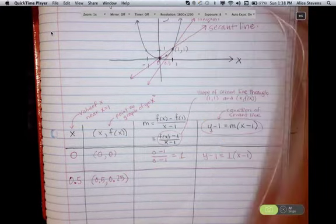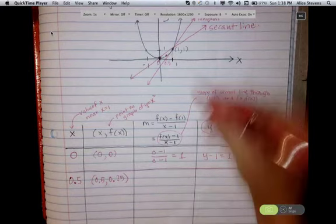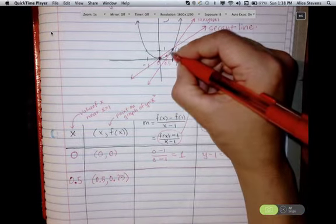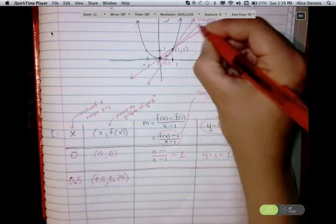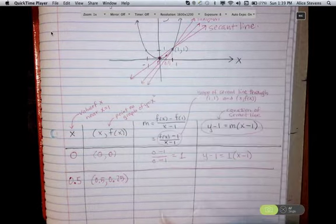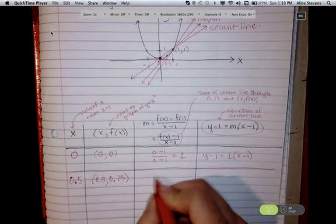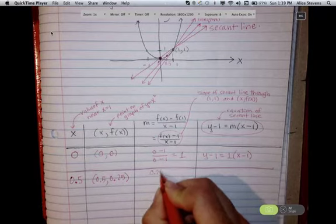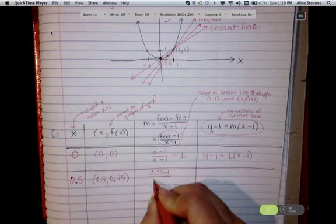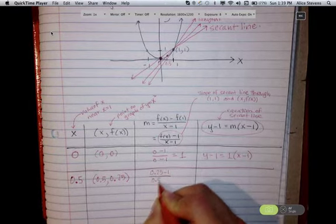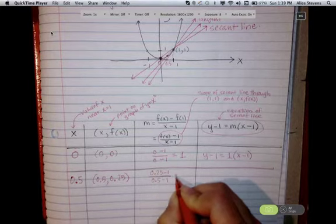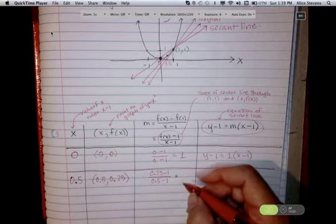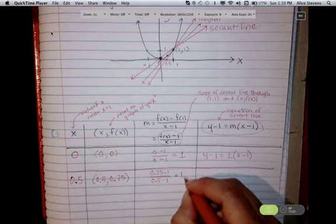And the slope of the secant line through the point 1, 1, and this point is given by 0.25 minus 1 over 0.5 minus 1, and this is just going to give me 1.5.